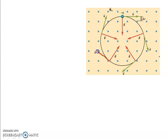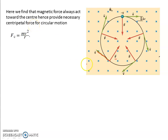A charge particle is moving in this direction with the magnetic field pointing inward. Using the Lorentz Force F = QV × B, the force will be perpendicular to both the direction of velocity and the magnetic field. Due to this force, the charge particle will perform circular motion, since the Lorentz Force becomes the centripetal force. In centripetal force, displacement is always perpendicular to the force, and here the velocity is also perpendicular to the force — so this is uniform circular motion.